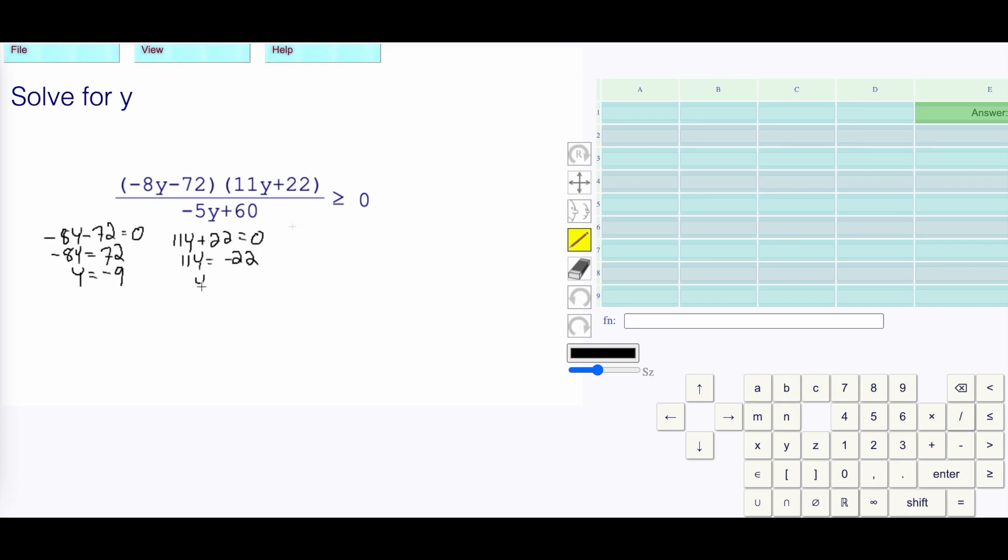Then we have -5y+60. Make that equal to 0. -5y+60 equals 0. Subtract 60 from both sides. -5y is equal to -60. Divide both sides by -5, y is equal to positive 12.